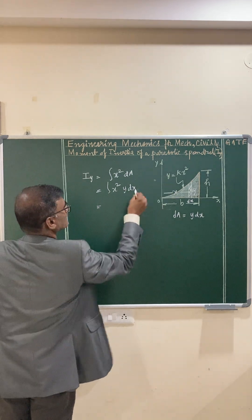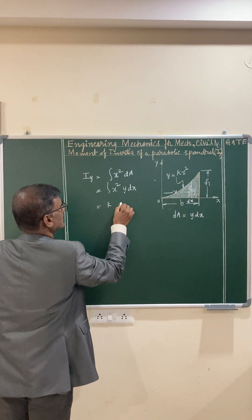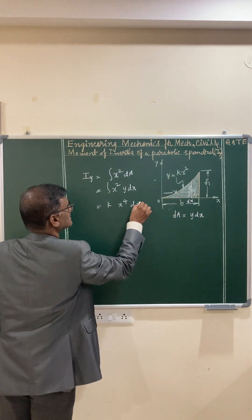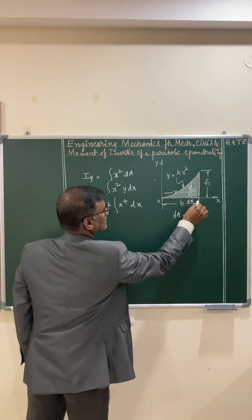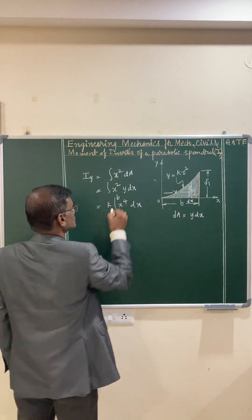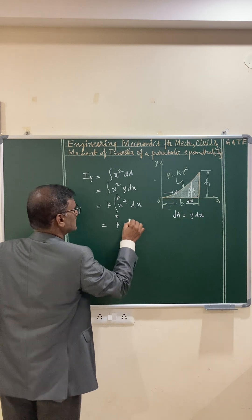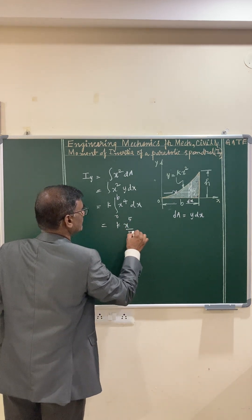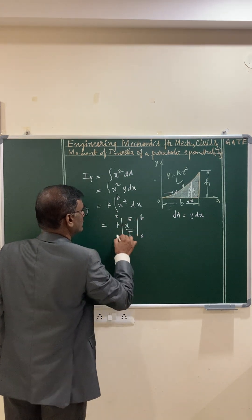It is y value is kx square and that is kx to the power 4 dx integral. The limits of integration is 0 to b. This becomes kx to the power 5 by 5, limits of 0 to b.